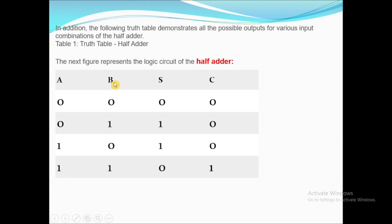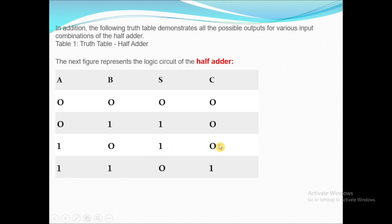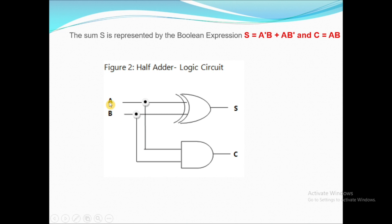Since we have two inputs, the number of possible outputs will be 2 raised to n, which is four. We write A as alternating: 0,0,1,1 and B as 0,1,0,1. When input is 0,0 the sum is 0 and carry is 0. Input 0,1 gives sum=1, carry=0. Input 1,0 gives sum=1, carry=0. When both inputs are 1,1 the sum is 0 and carry is 1.